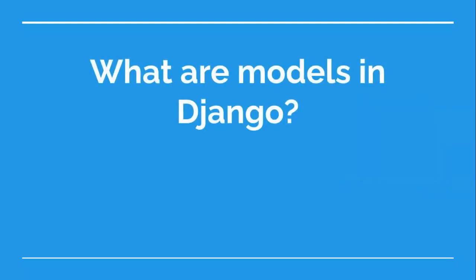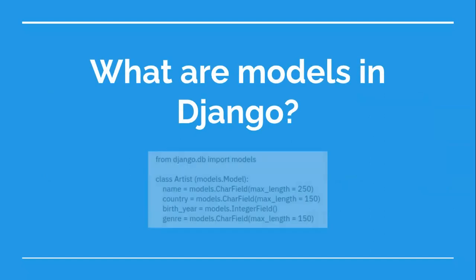A model in Django is a Python class defined by Django to represent data and facilitate the creation, update, and management of data in the database. If you are making a music store website, there are various data like user data and product details that you need to store. In this case, an artist is an object that has its own properties like name, country, genre, and birth year.